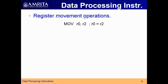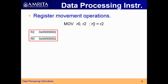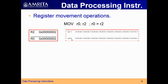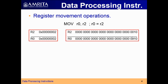Next are register movement operations. The first instruction is the MOVE instruction: MOV R0, R2 means the content of register R2 will be moved to R0. Let us take R2 having a certain hexadecimal value. When you execute this, the content of R2 will be moved to R0. This is the corresponding binary representation.